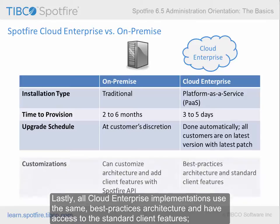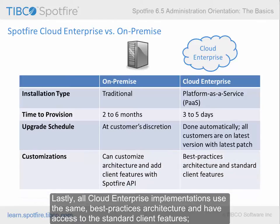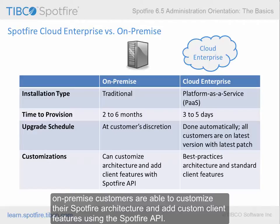Lastly, all Cloud Enterprise implementations use the same best practices architecture and have access to the standard client features. On-premise customers are able to customize their Spotfire architecture and add custom client features using the Spotfire API.